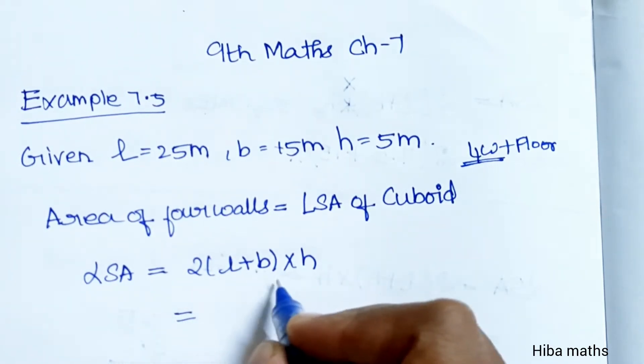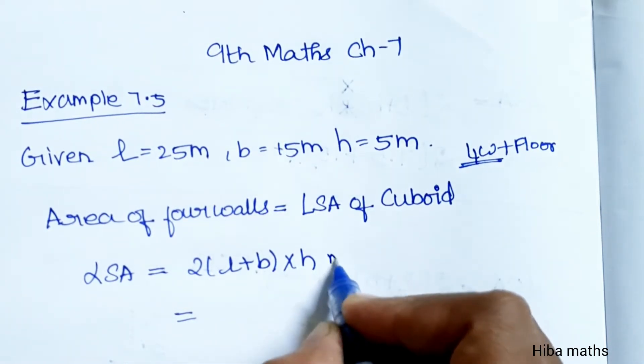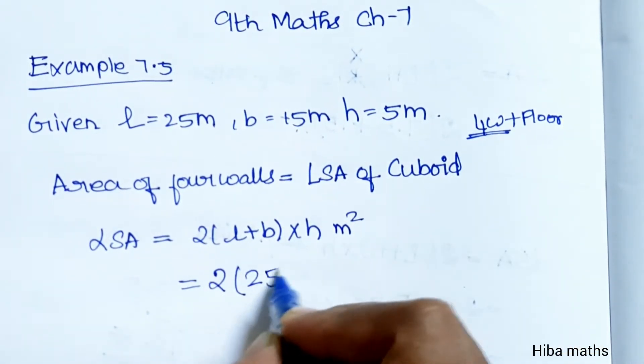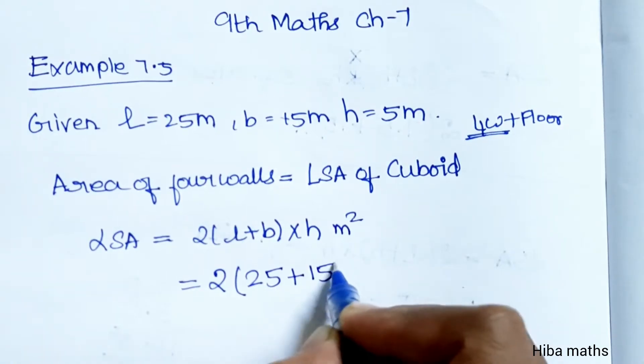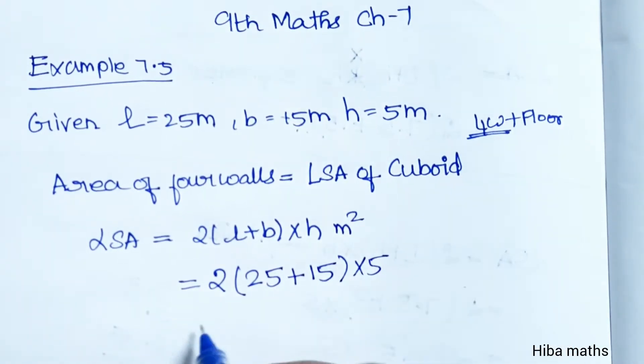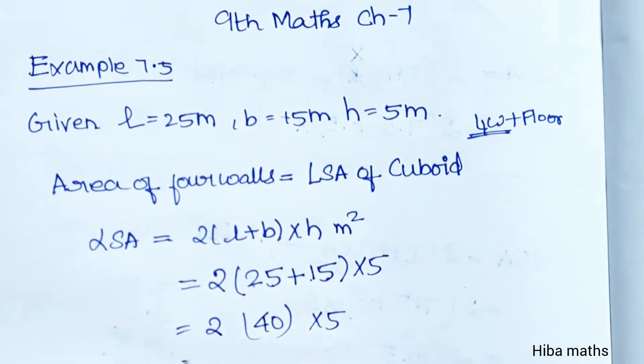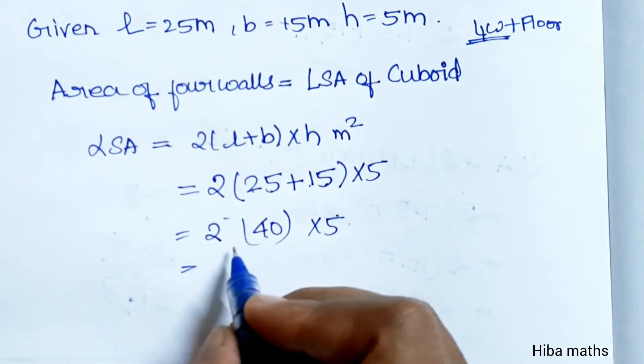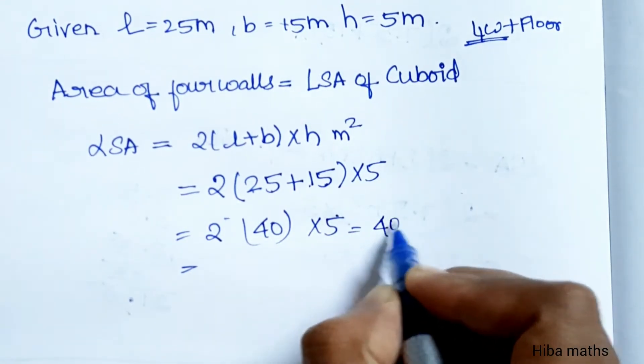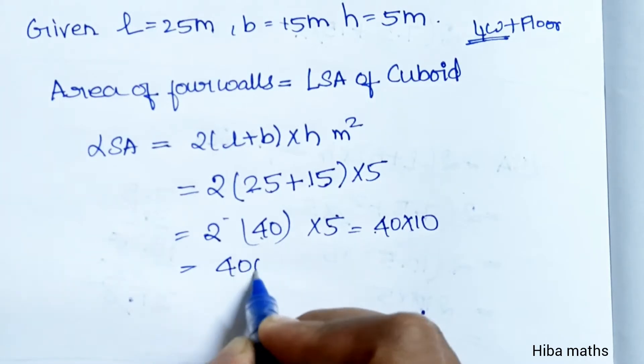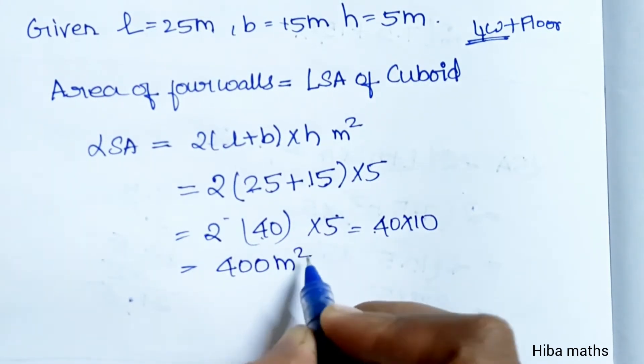So 2 × (L + B) × H in meter square. L value is 25, B value is 15, so 2 × (25 + 15) × 5 = 2 × 40 × 5 = 40 × 10 = 400 meter square.